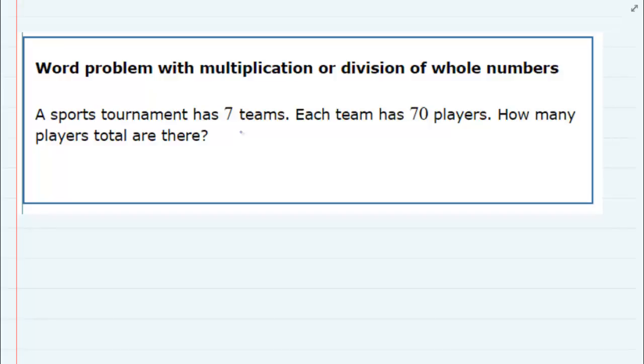Word problem with multiplication or division of whole numbers. We're told that a sports tournament has seven teams. Each team has 70 players. How many players total are there?